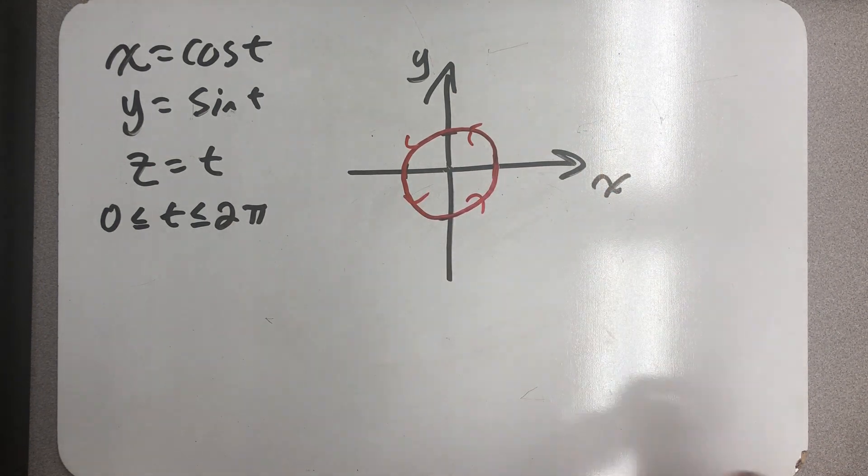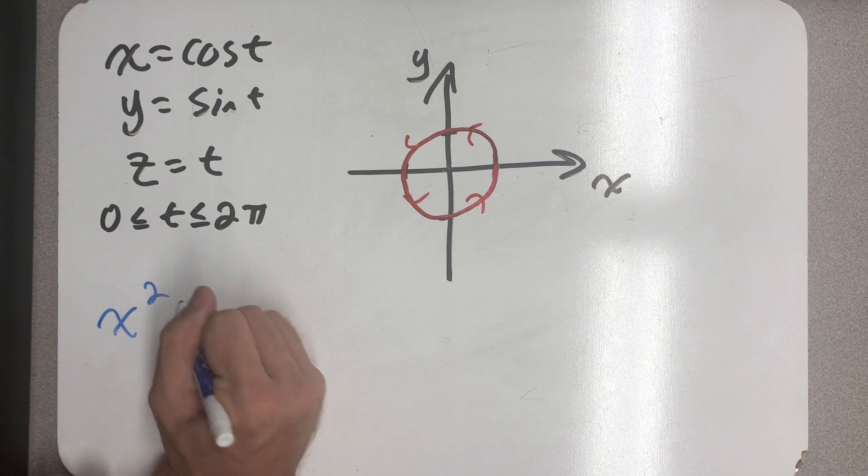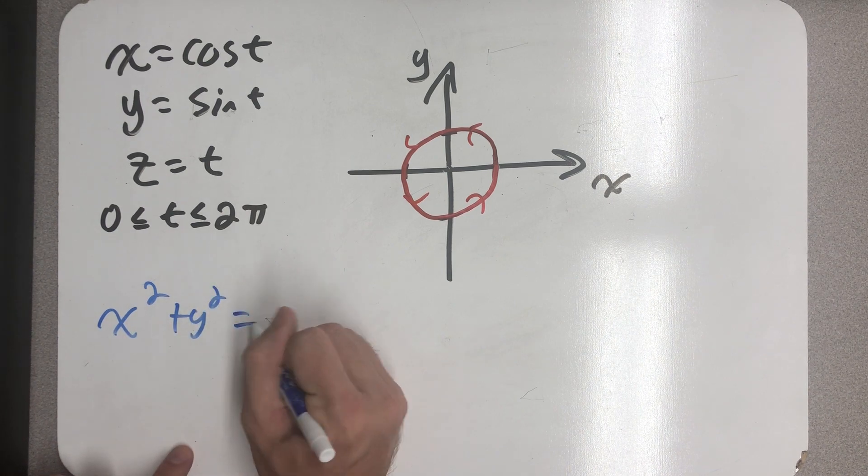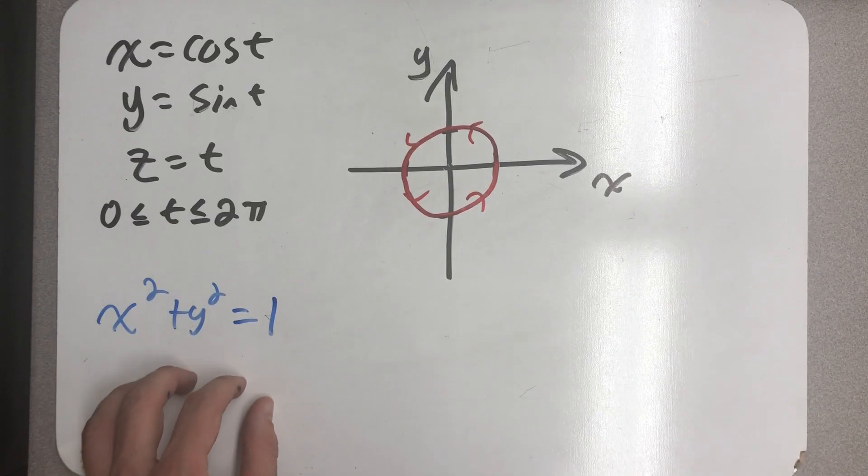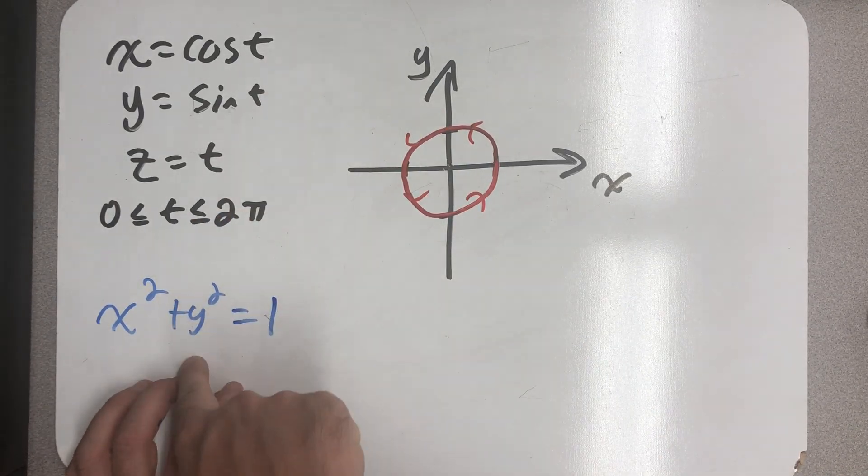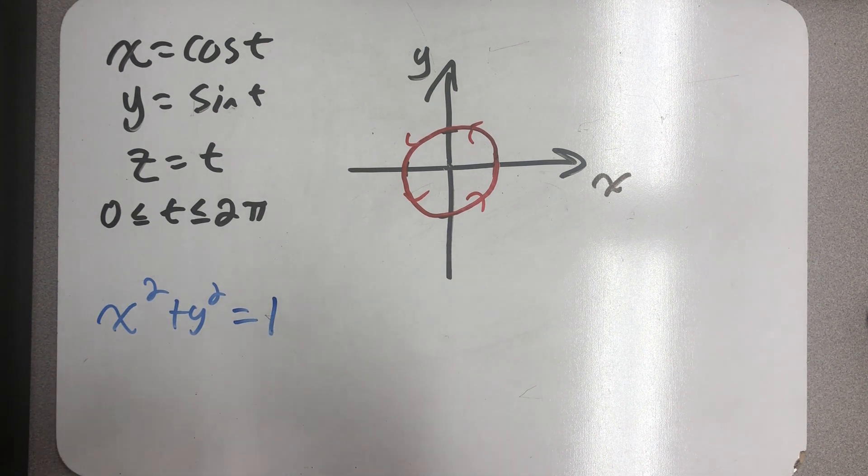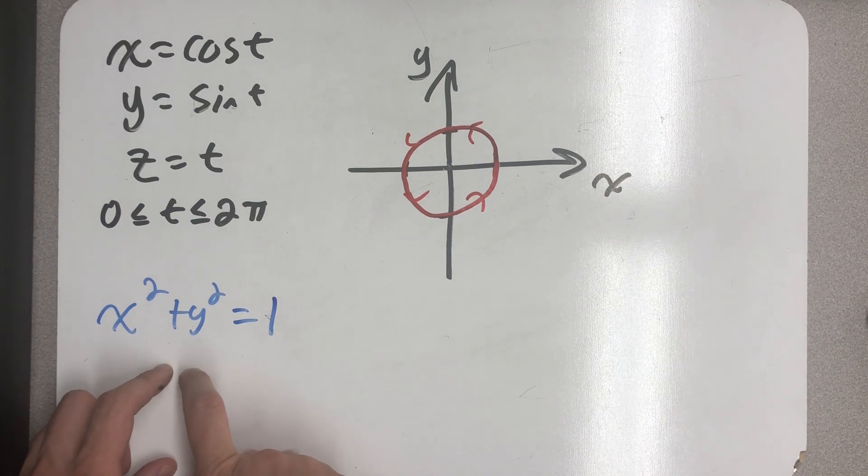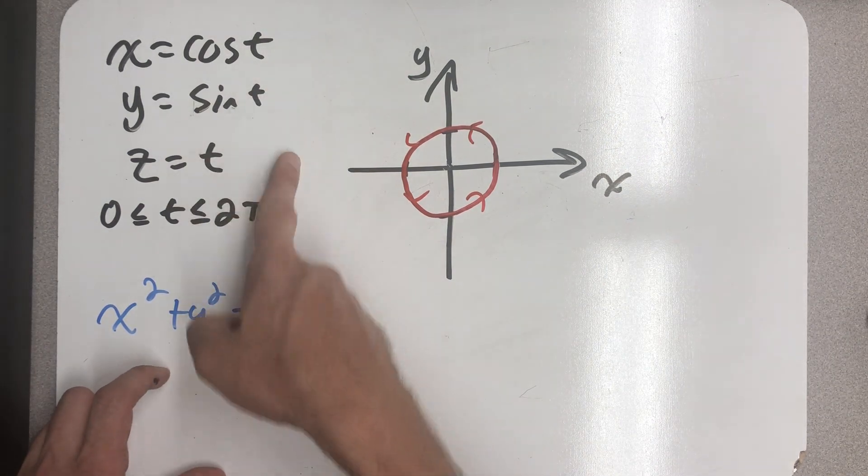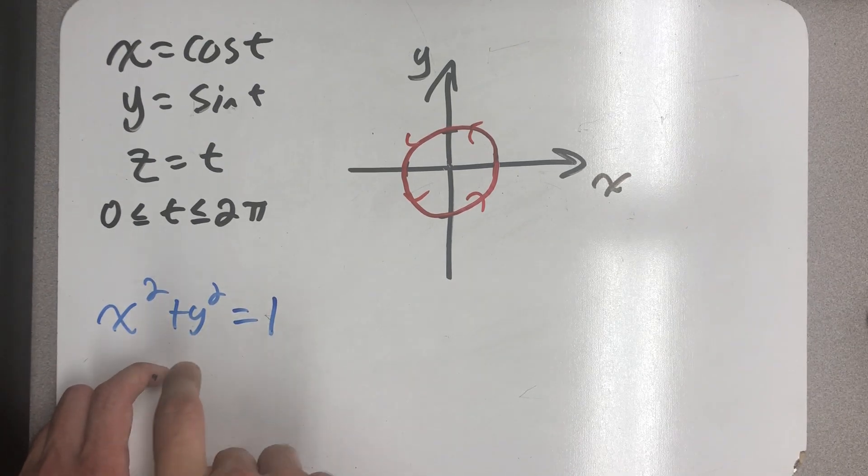In fact, this set of parametric equations still obeys, still lies within whatever this equation generates in space, right? Plug x in for x, plug y in for y. It doesn't matter what z is. And I get cosine squared plus sine squared equals 1. But this is the equation of an infinitely tall cylinder. So the set of points that this traces out has to lie on this infinitely tall cylinder.